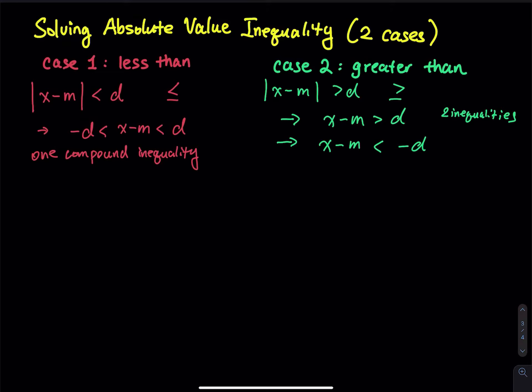Solving absolute value inequality, there are two cases. We do case 1 in this video and case 2 in the next video. Case 1 is a less than — we have the absolute value of x minus m less than d. The less than is facing, pointing at, the absolute value. This is also true for less than or equal to.